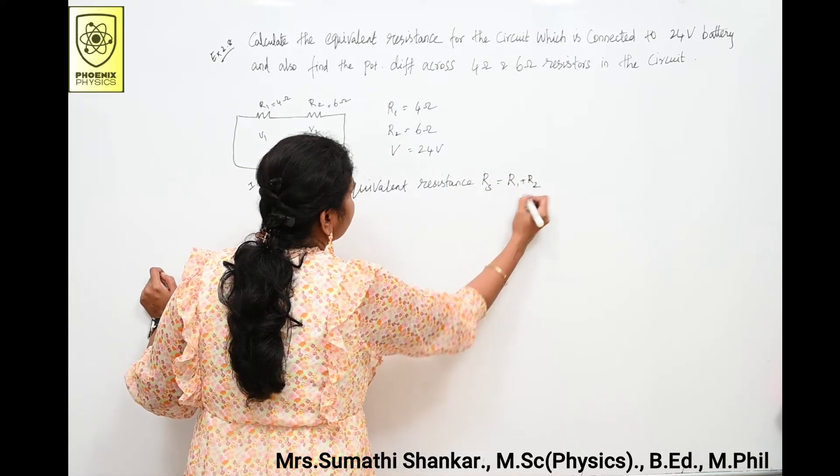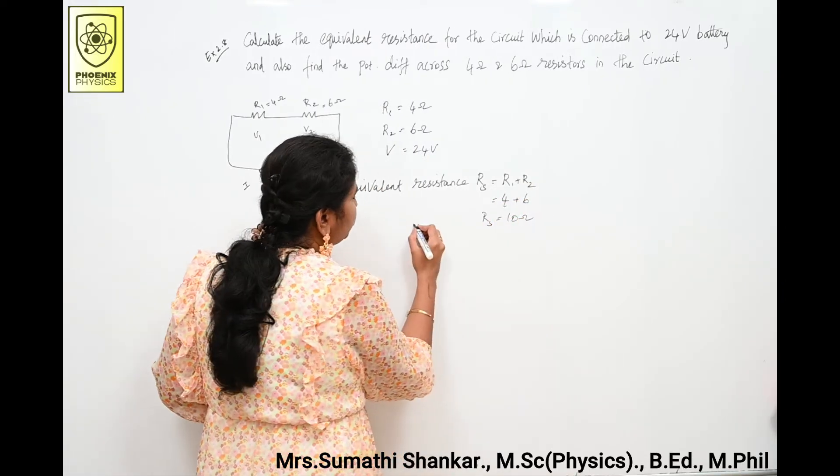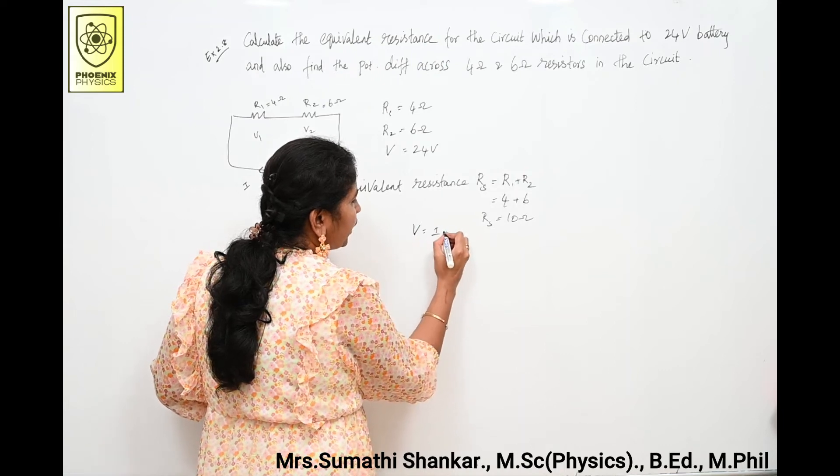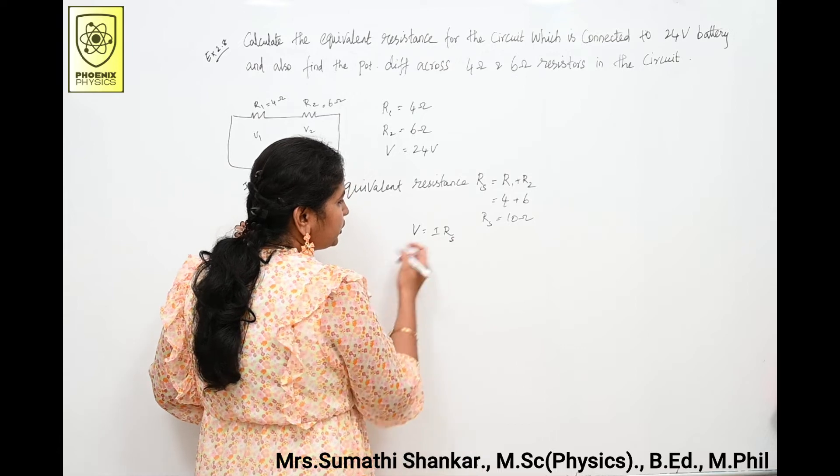R1 plus R2. Here R1 is equal to 4 plus 6, that is 10 ohm. According to Ohm's law, V is equal to I into R. Here instead of R you can write Rs. Then how do you find out